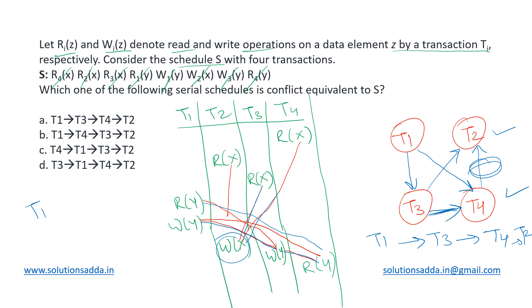And the order that we get is T1, T3, T4, and T2. This is the only topological sort that we got for this precedence graph. And hence from the given options, option A represents a serial schedule that will be conflict equivalent to the given schedule S. So that is our answer.